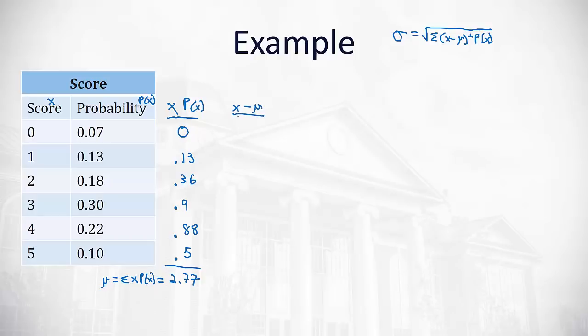First, x minus the average. We just calculated the average to be 2.77. x is the score, so 0 minus 2.77 is negative 2.77, 1 minus 2.77 is negative 1.77, 2 minus 2.77 is negative 0.77.